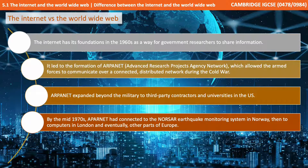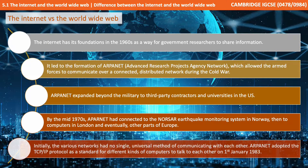By the mid-1970s, ARPANET had connected to NORSA, the Earthquake Monitoring System in Norway, and then to computers in London and eventually other parts of Europe. Initially, the different computer networks had no single standard way to communicate with each other. ARPANET eventually adopted the TCP/IP protocol as a standard way for different kinds of computers to talk to each other on the 1st of January 1983, and this is the point where most people consider the Internet to really have been born.